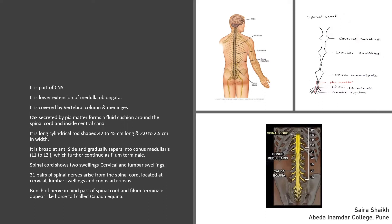The spinal cord is the elongation or extension of the medulla oblongata. We have studied that it is the last part of the hindbrain, which further continues as the spinal cord. The spinal cord runs through the vertebral column and is a long, thin, and tubular structure. The vertebral column provides protection to the spinal cord.